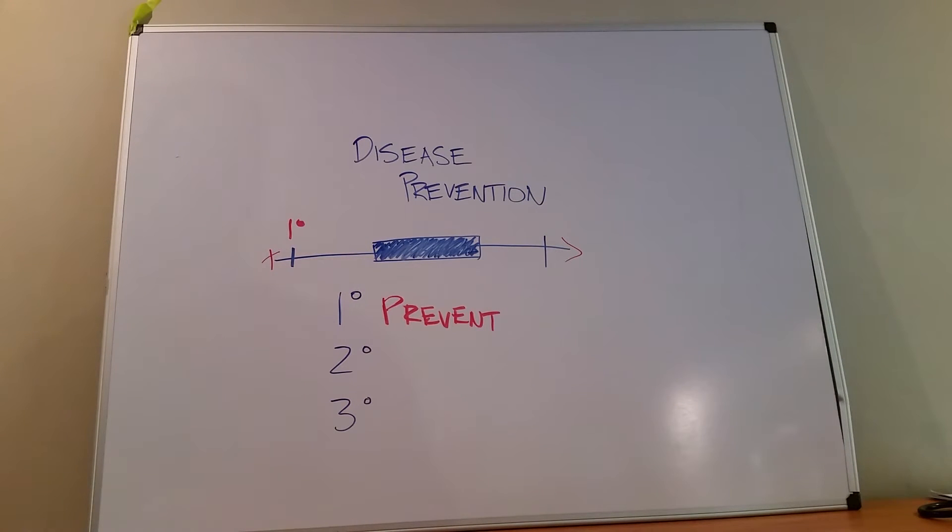So what's a good example of this? A good example might be encouraging people to eat a lot of fiber to prevent diverticulosis, or to get vaccinated when you're a child to try and avoid having these infectious diseases. That's primary disease prevention.